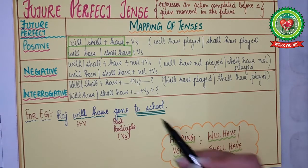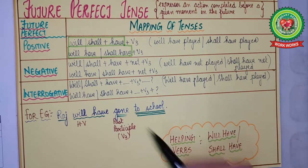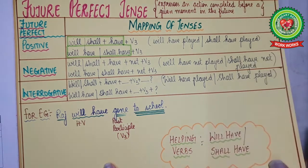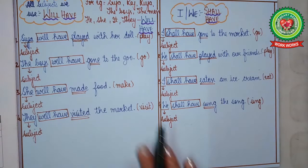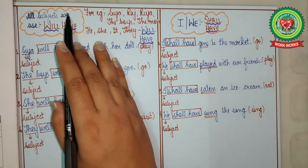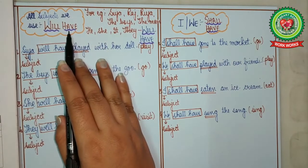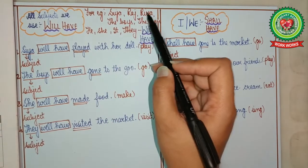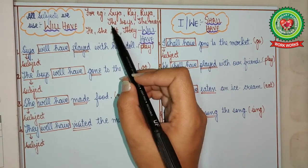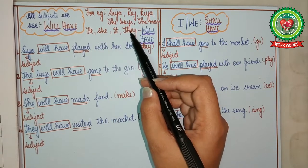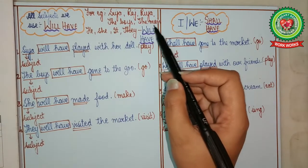Always remember the helping verbs used in future perfect tense are 'will have' and 'shall have.' With all subjects — Sia, Raj, Ria, the boys, the men, he, she, it, they, we — we will use 'will have.'